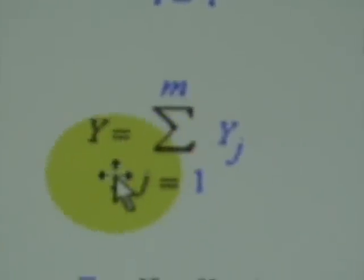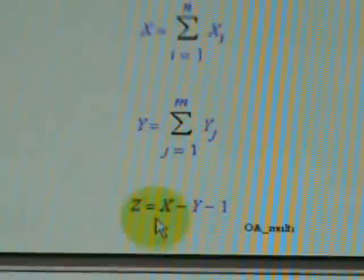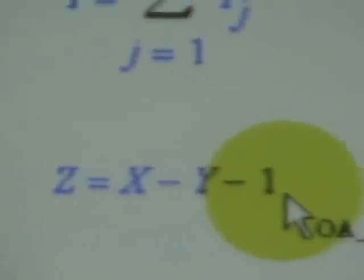So adding all those positive coefficients designated as X and those negative coefficients combined as Y, then he introduced Z equal to X minus Y minus 1. Then came up with this design summary.